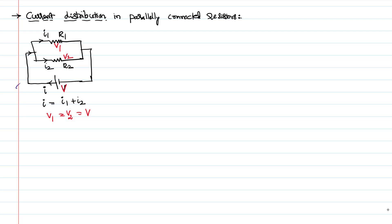Now I would like to know what's the value of I1 and I2 and how they depend on the resistances. We know as per Ohm's law, V equals IR. Here we write total V as V1 as well as V2. So V can be written as I times R_parallel, V1 can be written as I1 times R1, and V2 can be written as I2 times R2.